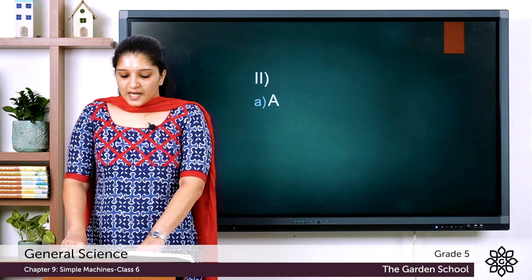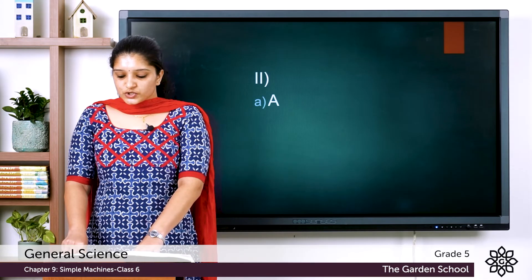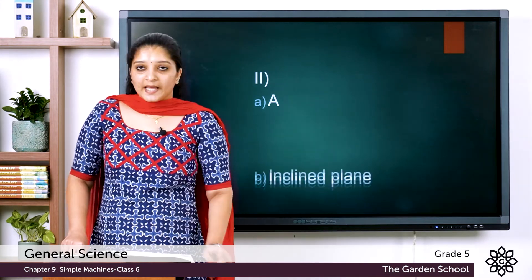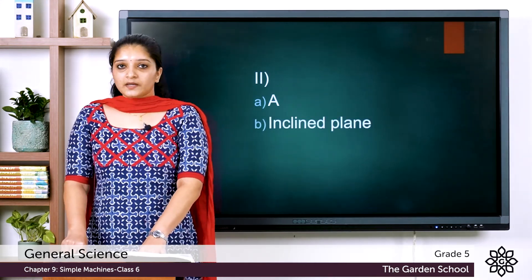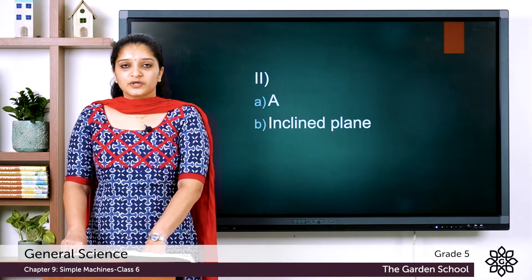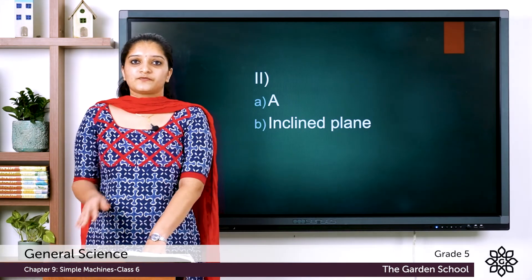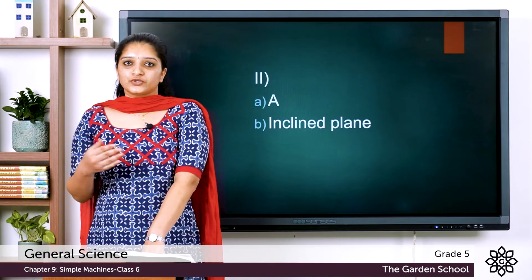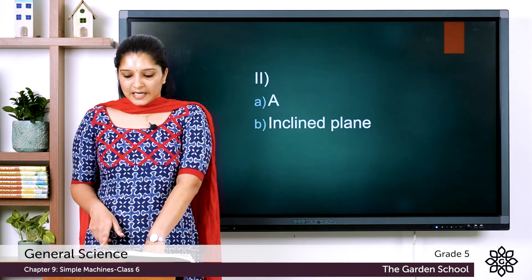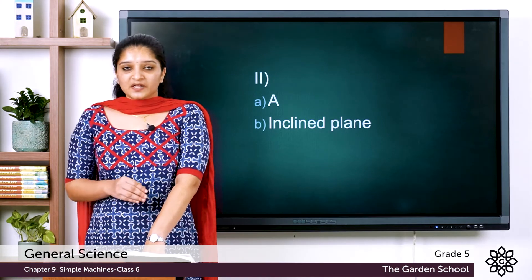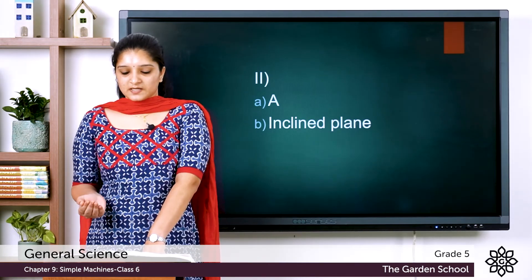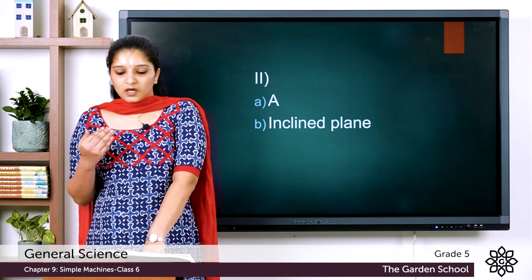The second question: name the simple machine being used to shift the cars into the truck. The answer is inclined plane. An inclined plane is a gradual sloping surface used to shift heavy objects from a lower surface to a higher surface. Here, the inclined plane is used to shift the car from a lower level to a higher level, that is from the ground to the truck.